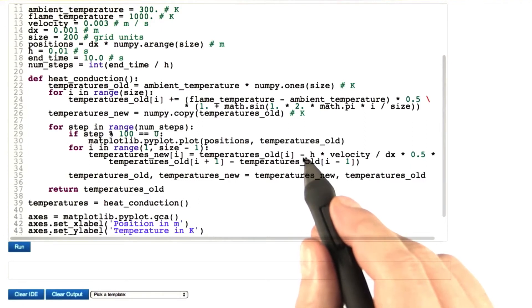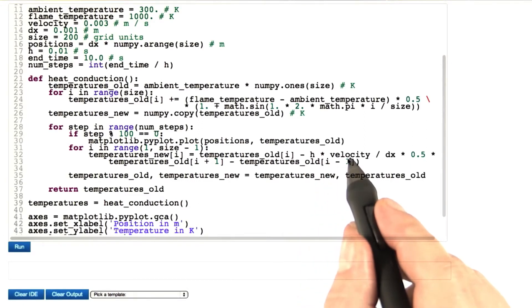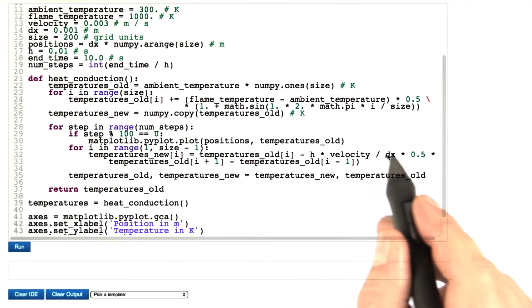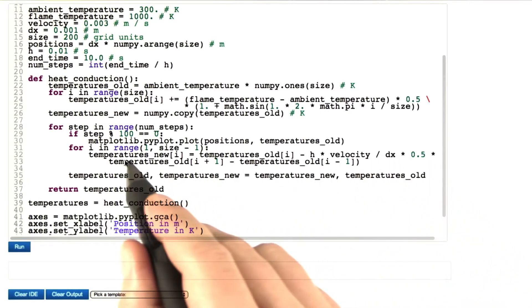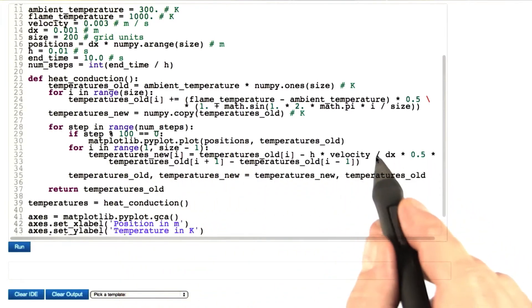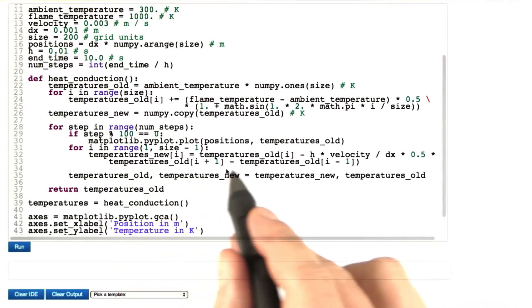No surprise in the implementation. We are subtracting step size times velocity times the estimate of the derivative, and that estimate stems from our central difference formula.